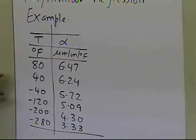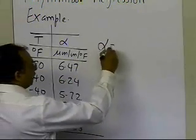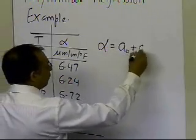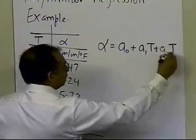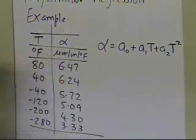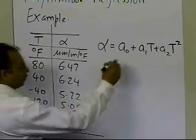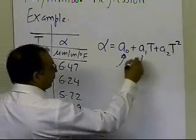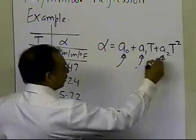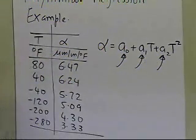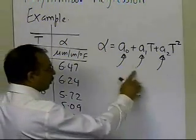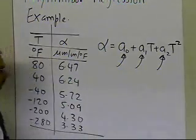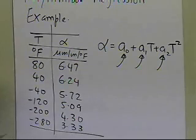We have alpha versus temperature data, and somebody tells us to regress it to a second-order polynomial. That means we have to find out what the three coefficients are — a0, a1, and a2. If we are able to find out these three constants of the second-order polynomial model, we have been able to do our regression.